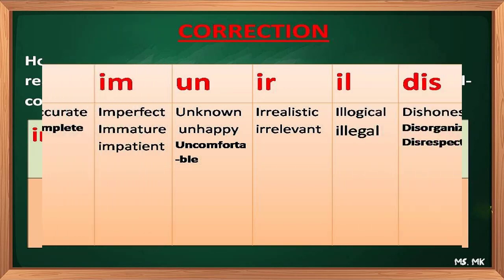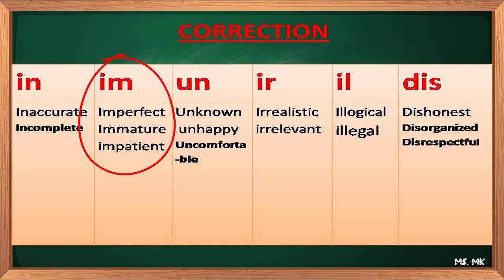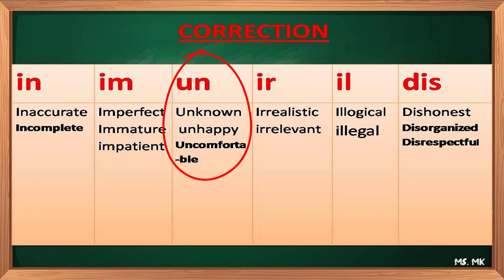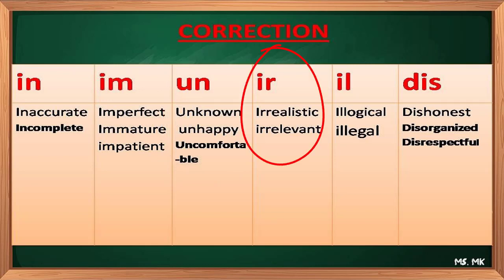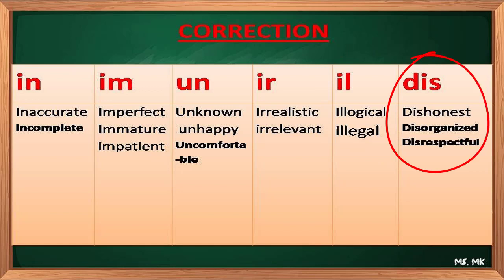Let's correct together. For IN: inaccurate, incomplete. For IM: imperfect, immature, impatient. For UN: unknown, unhappy, uncomfortable, unrealistic. For IR: irrelevant. For IL: illogical, illegal. For DIS: dishonest, disorganized, disrespectful.